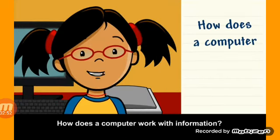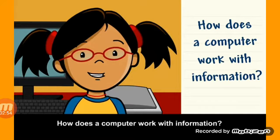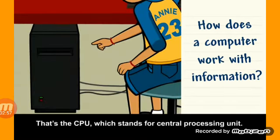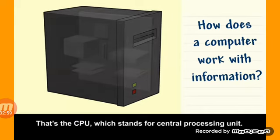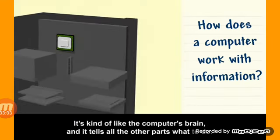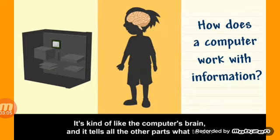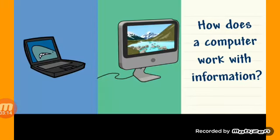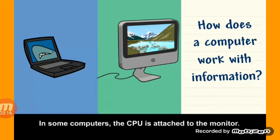How does a computer work with information? That's the CPU, which stands for Central Processing Unit. It's kind of like the computer's brain, and it tells all the other parts what to do. The CPU works with the computer's memory, which stores information. In some computers, the CPU is attached to the monitor.